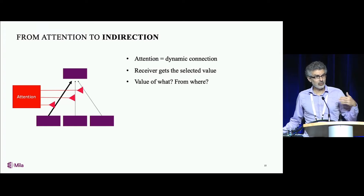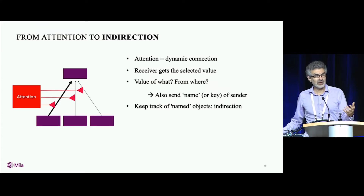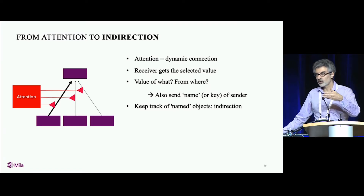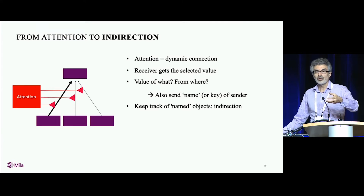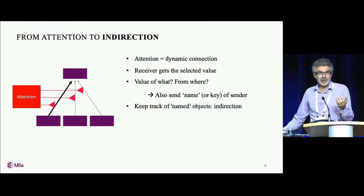What we're doing with attention mechanisms is, in addition to the value, we have some concept of key — a kind of identifier for where the value is coming from. We're using those keys to decide which element should get the attention. But that key is also sent to the next level, and so downstream computation can know what the value it's getting is, what it's coming from, what kind of object it is, what kind of type it is. You can think of this as creating a name for these objects and creating a form of indirection.